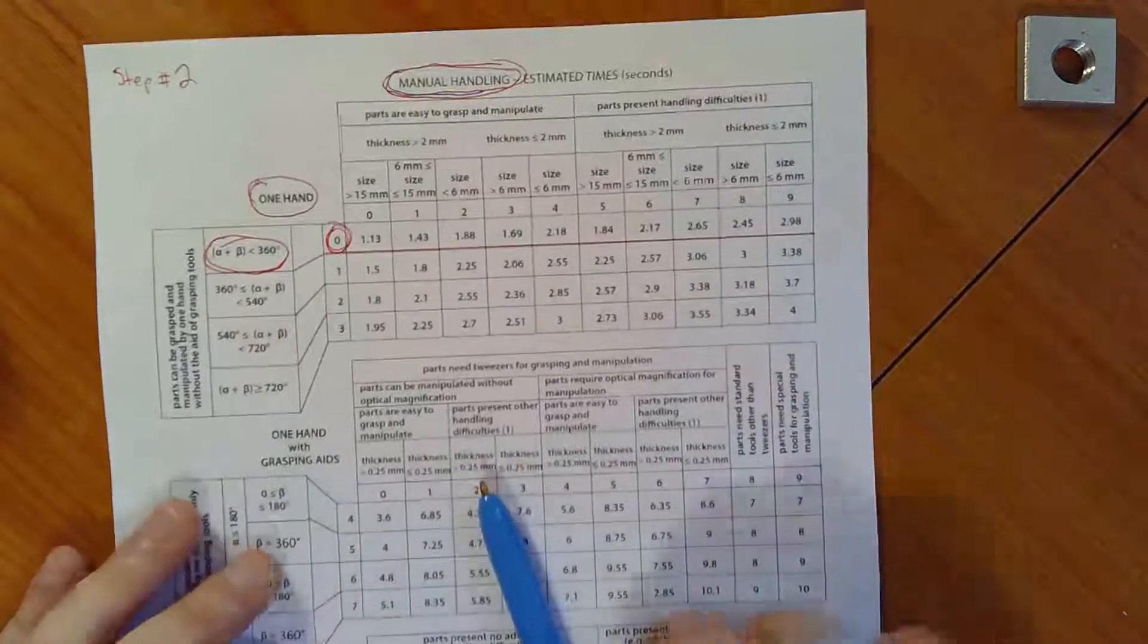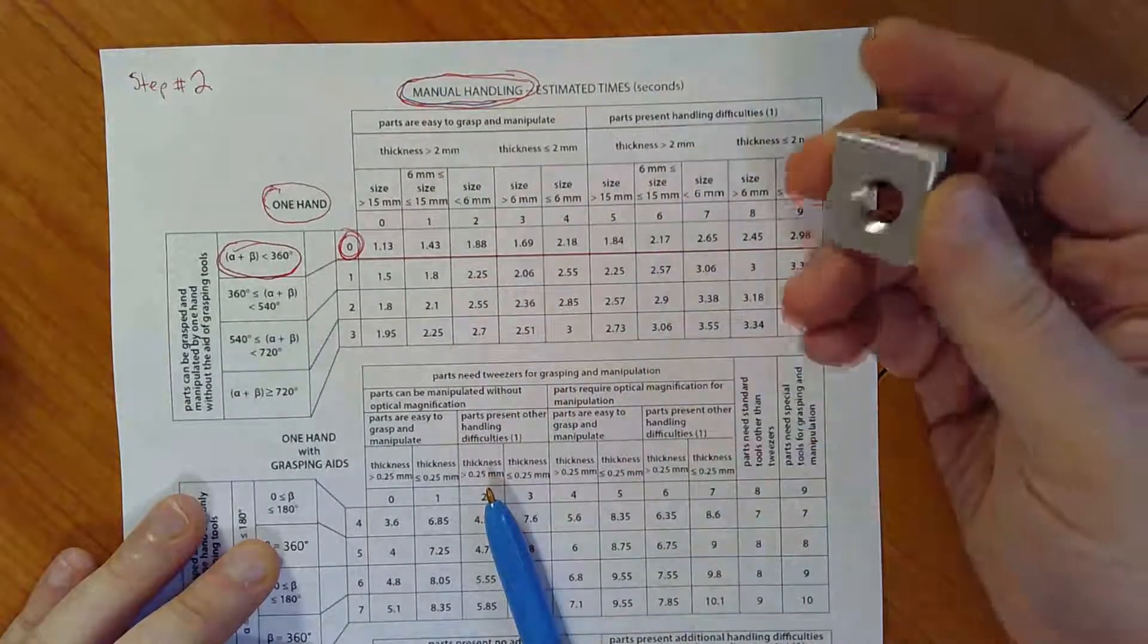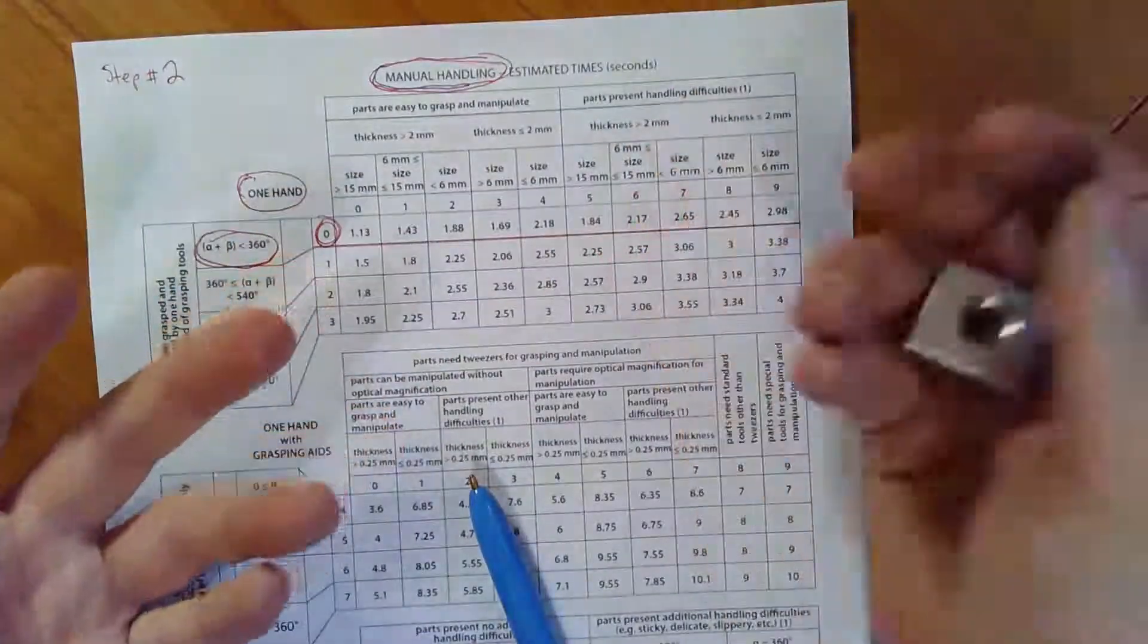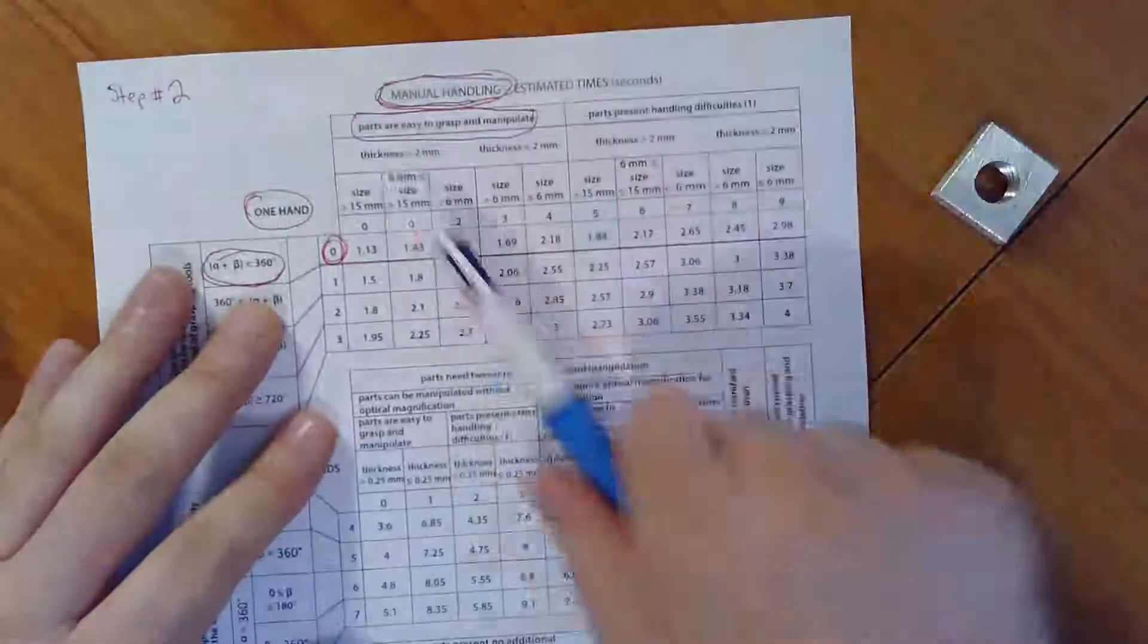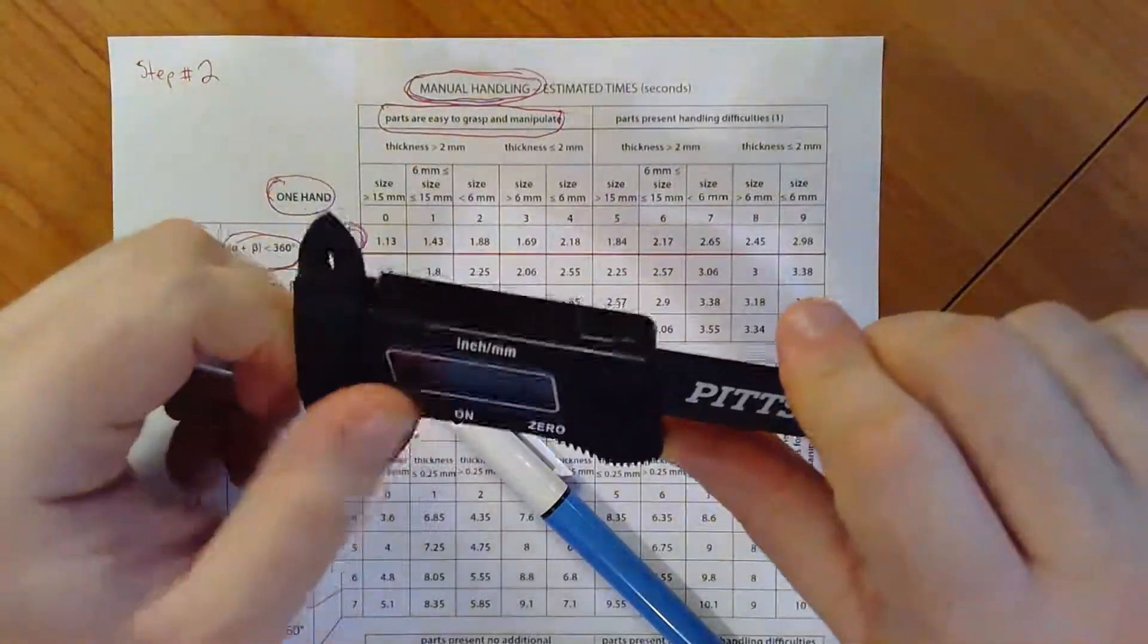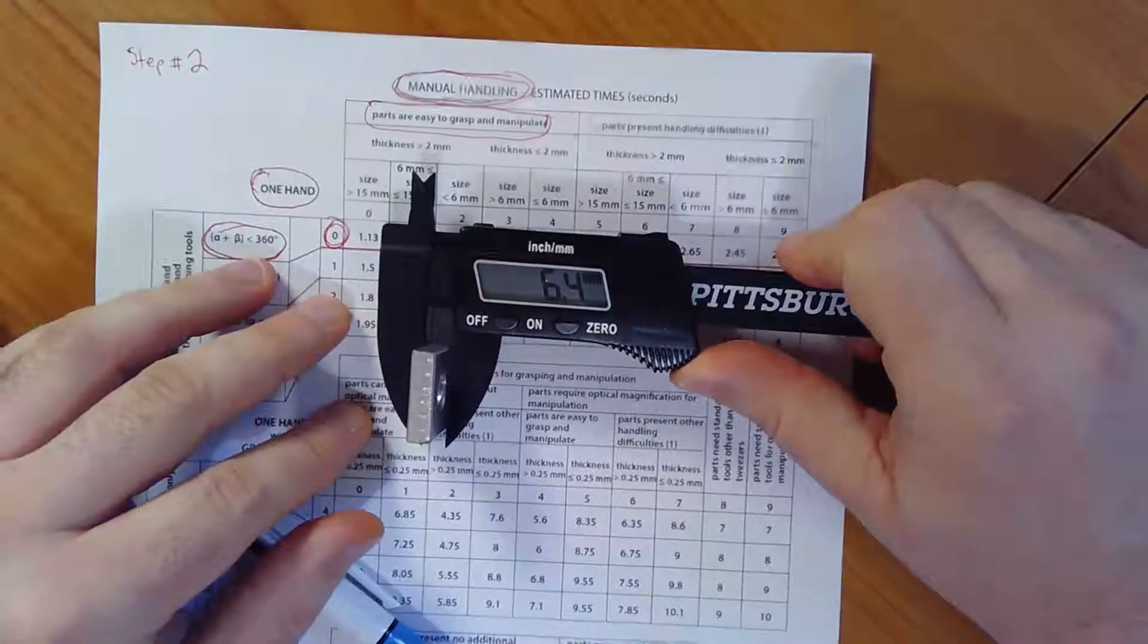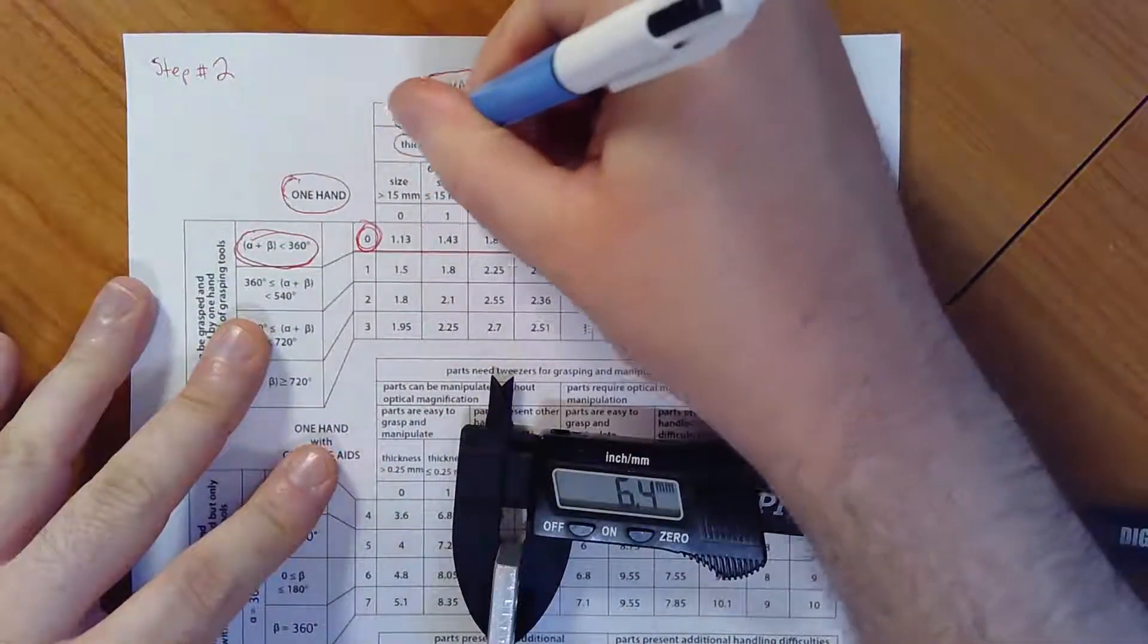How do I get the column? Well, I've got to remember I'm now reading down. Is the part easy to grasp and manipulate or is it presenting difficulties? It's easy to grasp and manipulate. I've broken all the corners and I've sanded the part down. So there's no sharps or anything on here. It's not hot. So easy to pick up. So I'm going to grab parts are easy to grasp and manipulate. And I'm going to now take a measurement to get the thickness. Remember, again, the thickness is the smallest linear dimension that you could potentially grasp the part from. I got my caliper. I've got it zeroed. I'm going to take a measurement again. I'm operating in millimeters instead of inches. Six point four millimeters. Six point four millimeters is going to be thicker than two millimeters. So I'm going to circle this guy.